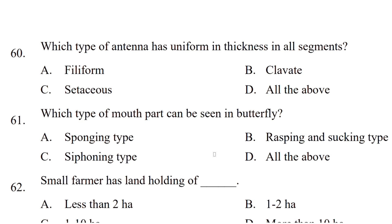Which type of antenna has uniform thickness in all segments? The options are filiform, clavate, setaceous, or all of the above. The correct answer is filiform. Which type of mouthpart can be seen in butterfly? Sponging type, rasping and sucking type, siphoning type, or all of the above? The correct answer is siphoning type.